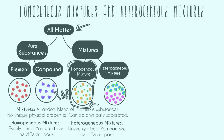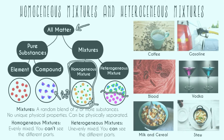Heterogeneous is unevenly mixed, which means you can see the different parts. An example is oil and water — if you pour them together you can clearly see where the oil is and where the water is, even if you shake it. In our diagram, purple is generally on the bottom and green/blue is on top, so if this were visible to the human eye you'd be able to see yeah, that looks like two different things.